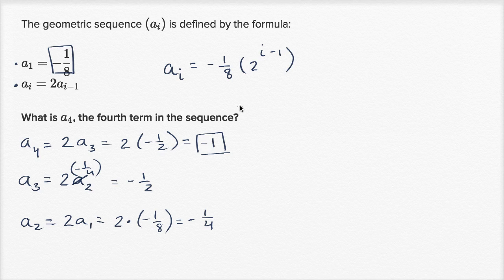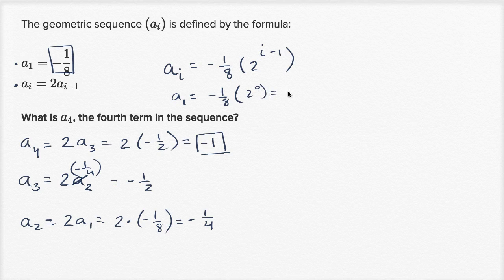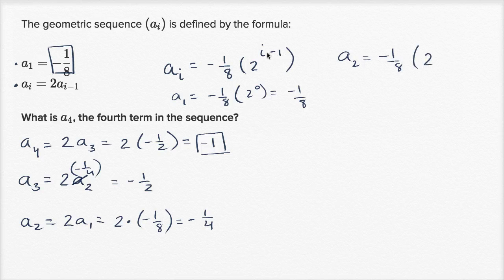Let's make sure that makes sense. A₁, based on this formula, would be negative one eighth times two to the one minus one — two to the zeroth power — which is negative one eighth. That checks out. A₂ would be negative one eighth times two to the two minus one, so two to the first power. We take our initial term and multiply it by two once, which gives us negative one fourth. That's exactly right.